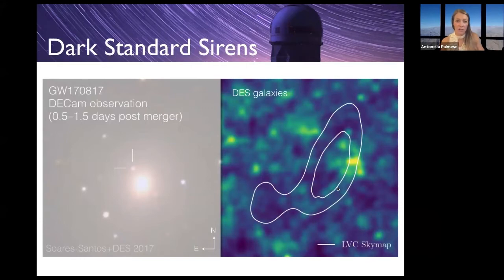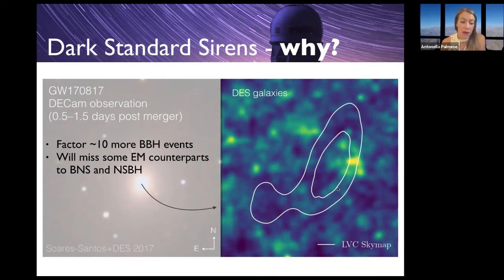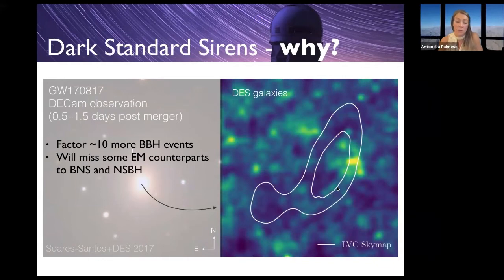Now the dark standard siren case. You might wonder why we want to do this rather than wait for more bright standard siren events. The answer is that we have many more binary black hole events without counterparts, and even binary neutron stars and NSBH events without counterparts. So far we have only one event with a counterpart, and all others sit on top of our galaxy catalogs. It makes sense to attempt this measurement, which will become very constraining in the future.